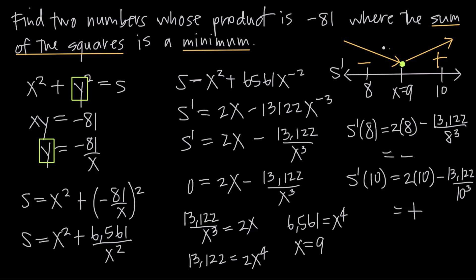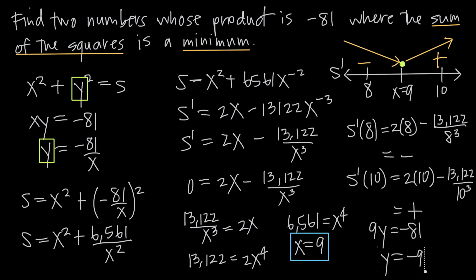We must come back to the original question and make sure we answer exactly what was asked: find two numbers whose product is negative 81. We know x equals 9, and our numbers are x and y with xy equals negative 81. Plugging in x equals 9 gives 9y equals negative 81, so dividing both sides by 9 gives y equals negative 9. Therefore the two numbers are x equals 9 and y equals negative 9 — these are the two numbers whose product is negative 81 where the sum of their squares is a minimum.